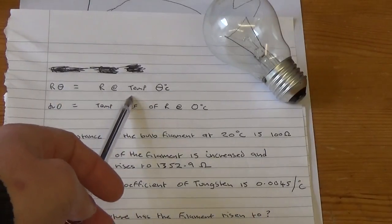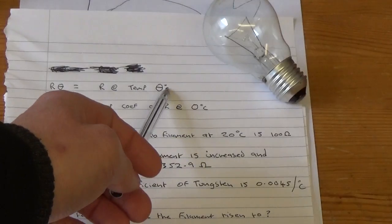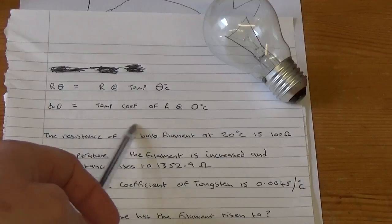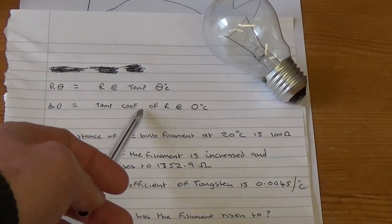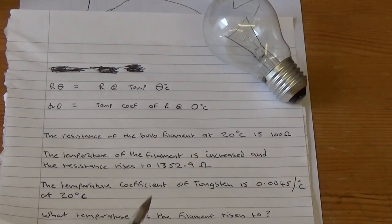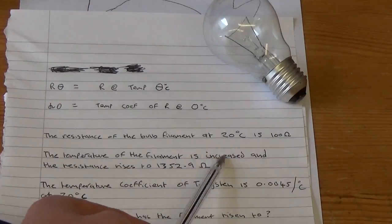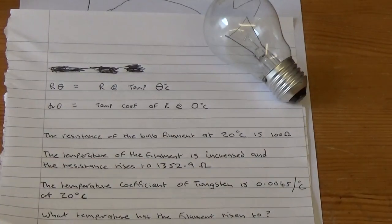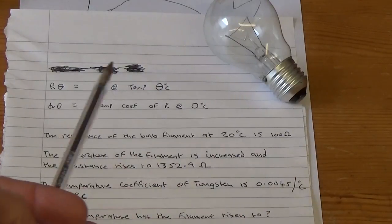This means a resistance at a certain temperature. And this alpha zero, this is the temperature coefficient of the resistance of the material at naught degrees C. So let's have a look what we got. The resistance of the bulb filament at 20 degrees C, so that's more or less how warm most homes are now, and that's what he actually measured, around 100 ohms.